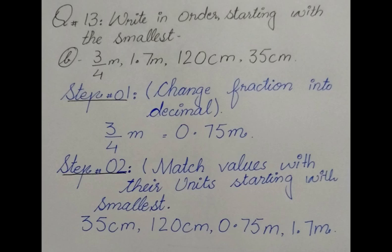It will be easier to write now from smallest to largest. First of all, we will see the smallest unit. I have told you that between meter and centimeter, the smallest is millimeter. Step 1 is to change the fraction into decimal.